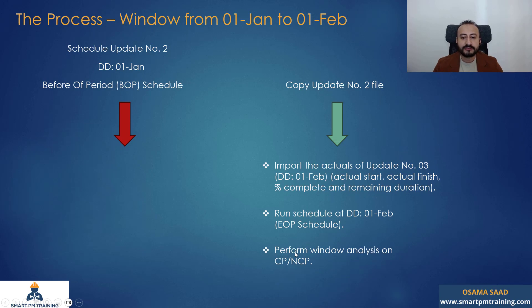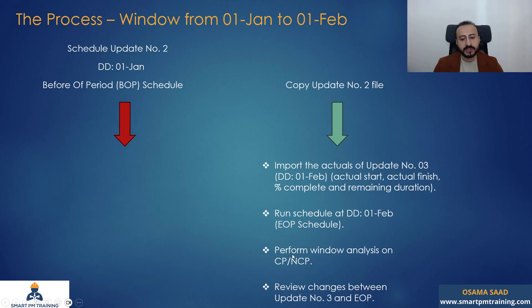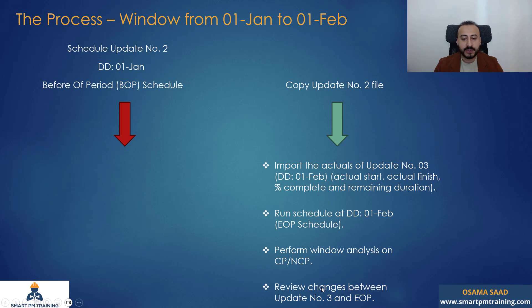Then you're going to follow the same process as 3.3. You will perform window analysis on the critical path activities and the near critical path. You will also review changes between the schedule update itself — number three, the one I took actuals from — and compare it with the end of period. The end of period is the one without any changes.